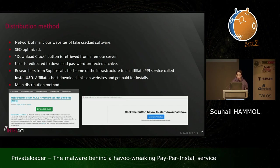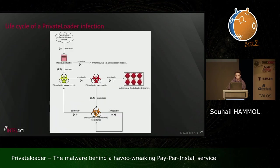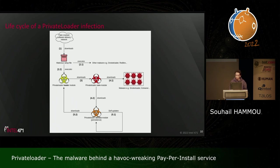The life cycle of a Private Loader infection starts with a malicious setup file that bundles multiple malware families dropped to disk and executed — like SmokeLoader, Redline, and GCleaner. One of the payloads is the Private Loader module. This loader module's sole purpose is to download and execute the core module, which handles the actual core functionality. The core module communicates with the PPI service backend, retrieves the installs, executes them, and clutters the machine with even more malware.